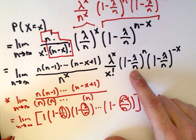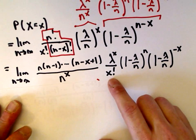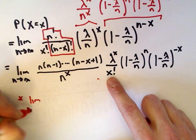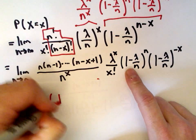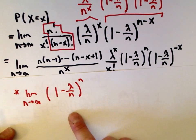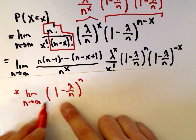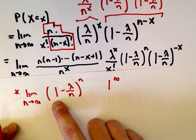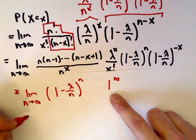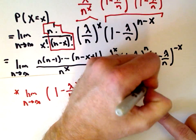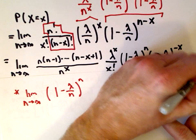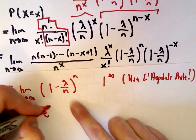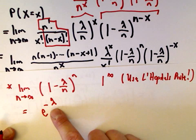The term lambda to the x over x factorial just appears in the formula, so we leave that alone. Now let's look at the limit as n goes to infinity of 1 minus lambda over n, raised to the n. This is the indeterminate form 1 to the infinity — since lambda over n goes to 0, we have 1 minus 0 to the infinity. You can justify this using L'Hôpital's rule. This limit equals e to the negative lambda — that's where our e to the negative lambda comes from.